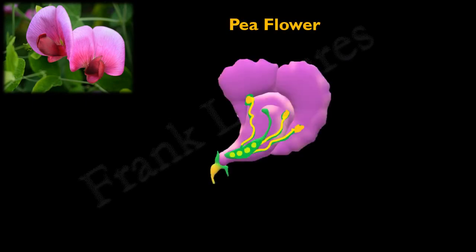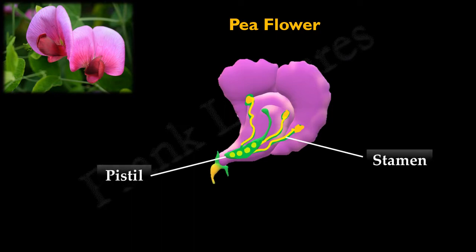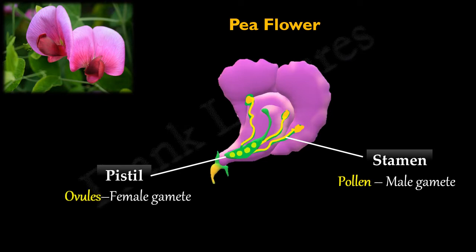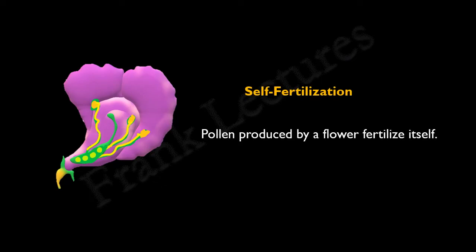Let's understand this by illustration. This is a flower of the pea plant. As you can see in this image, the flower has both male and female sex organs — that is, stamen and pistil. Stamen contains the pollen, that is the male gamete, and pistil contains the ovules, the female gamete. Normally, pea flowers self-fertilize, which means the pollen produced by the flower fertilizes itself.